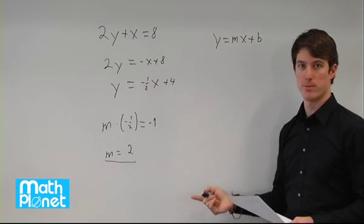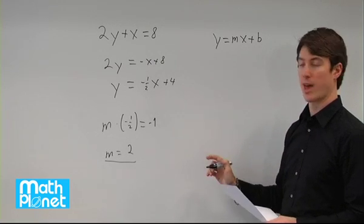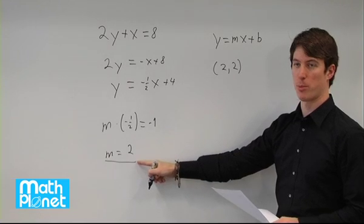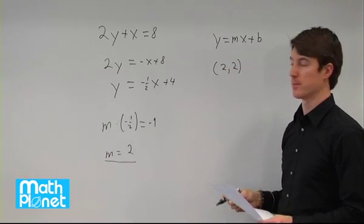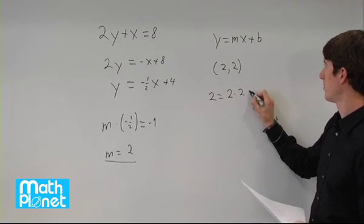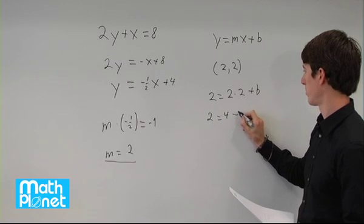We know the slope, and we also know that it passes through the point (2,2). So we can plug that point in, the point (2,2), as well as this slope here, 2, and just solve for b. So we have 2 equals 2 times 2 plus b. So 2 equals 4 plus b.